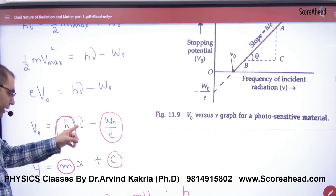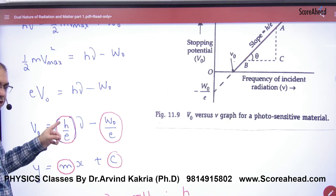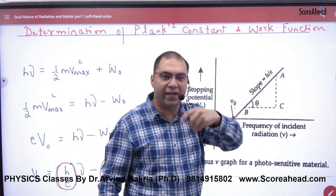This is the Y-axis, this is the X-axis, and this is the slope. So what was the slope of the graph? h upon E. What will the slope of the graph be? h by E.